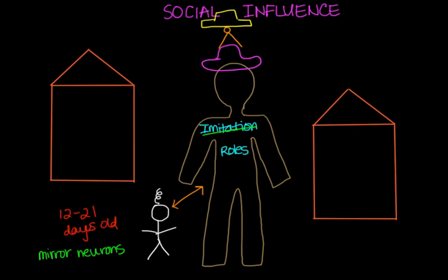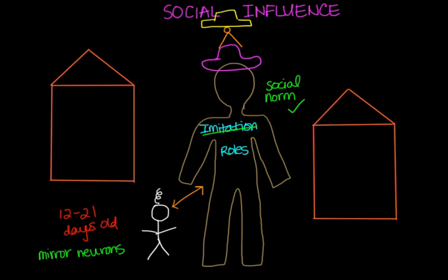With each social role, we adopt different behavior changes to fit the expectations that both we and others have of that role. A related term is social norm — the accepted standards of behavior of social groups that define appropriate behavior for every group. As an individual moves from one group to the next, their behavior changes accordingly. Norms provide order in society and guide our behavior. We conform to the expectations of others and respond to their approval when we play our roles well.